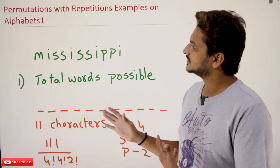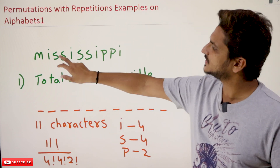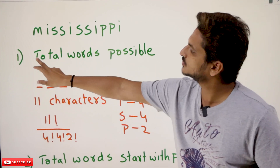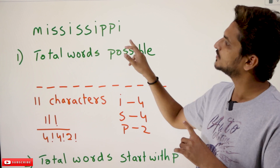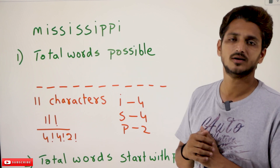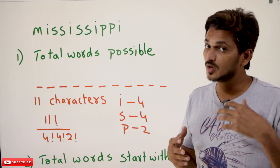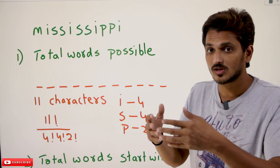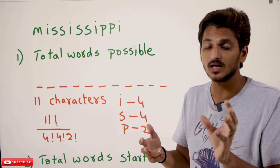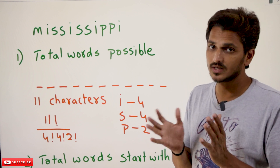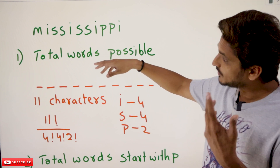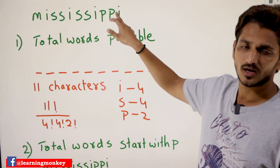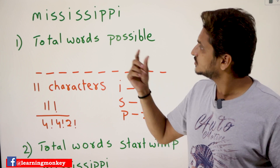Coming to today's class, see here the first example. Take the word Mississippi. From this word they are going to ask questions like: total number of words possible using the characters present in this word. Similar type of examples we already did in permutations without repetitions. Our explanation is based on the assumption that you already have the basic knowledge. From our previous classes, if we assume that the characters present in this word are all unique, means there is no repetition.